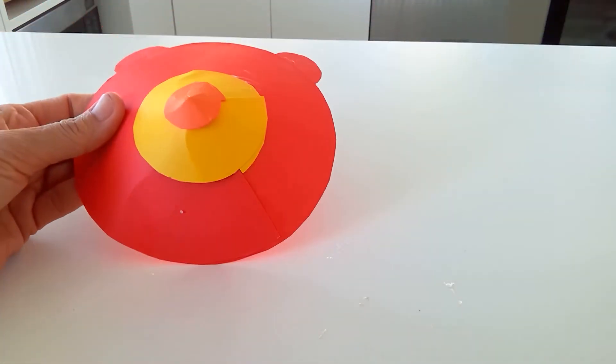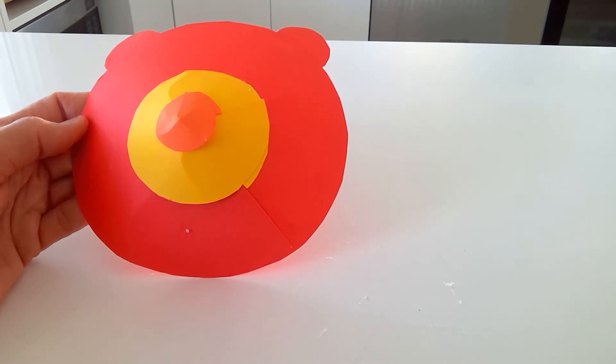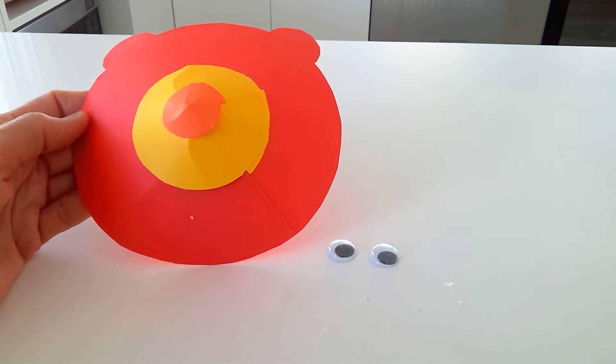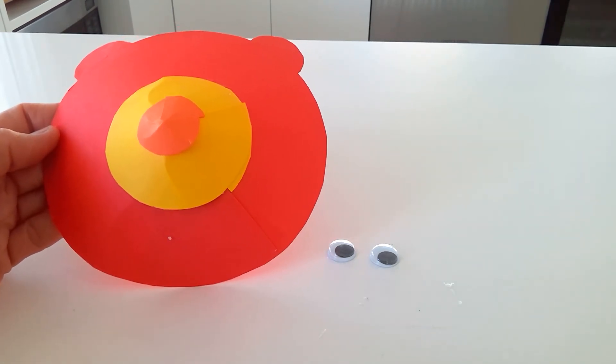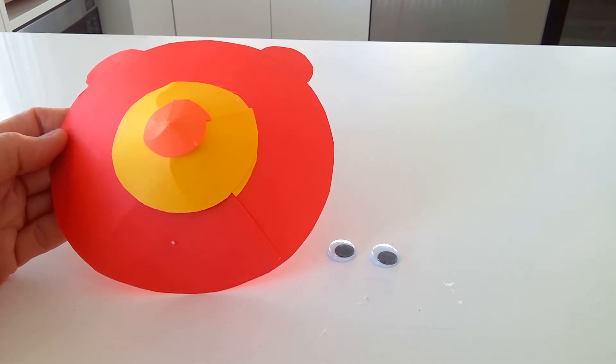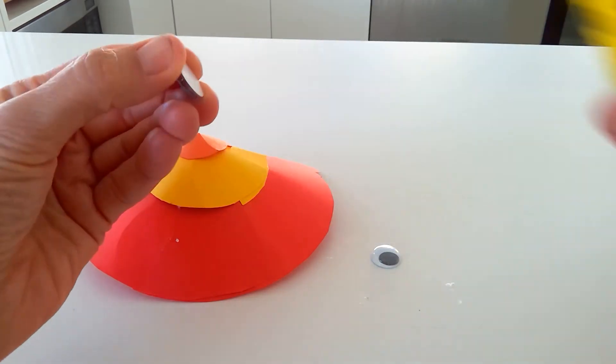There we go. That's looking really great, everybody. Now I've got some googly eyes here that I'm going to use for the eyes of my bear. But if you've got some white and black cardboard or any colour cardboard, you could just cut some small circles out of the cardboard and use them for your bear. Not everyone has the googly eyes at home.